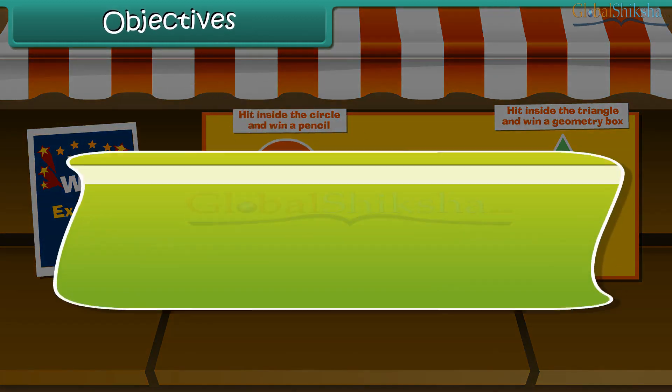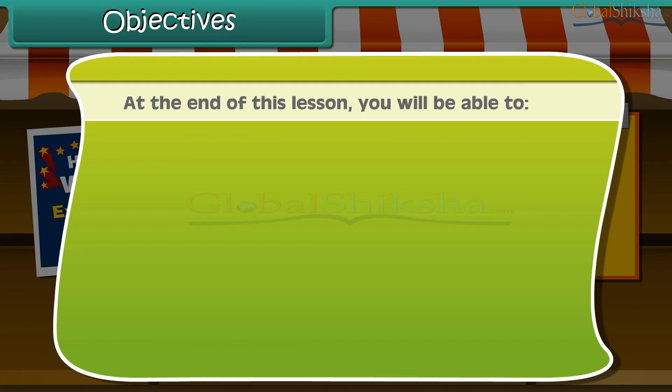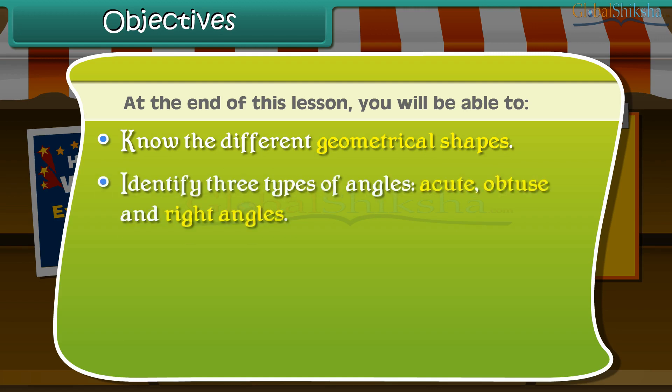At the end of this lesson, you'll be able to know the different geometrical shapes, identify three types of angles: acute, obtuse, and right angles.